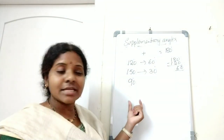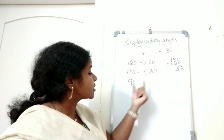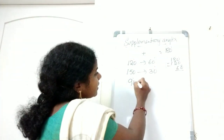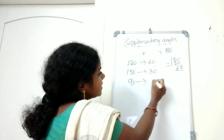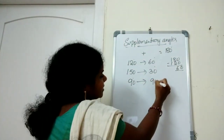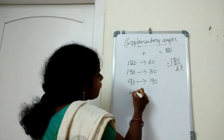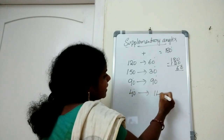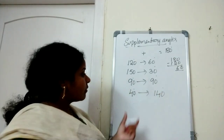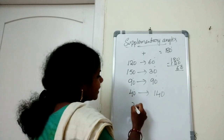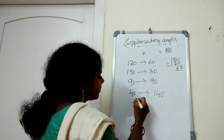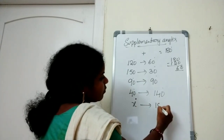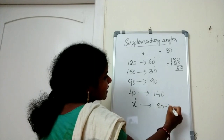The sum of two angles is equal to 180 degrees. 90 plus 90 is 180, so 180 minus 90 is 90 degrees. What is the supplementary angle of 40 degrees? 140 degrees. What is the supplementary angle of x degrees? 180 minus x.